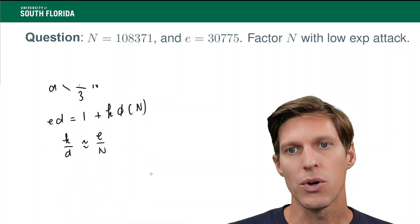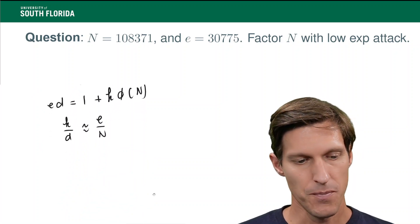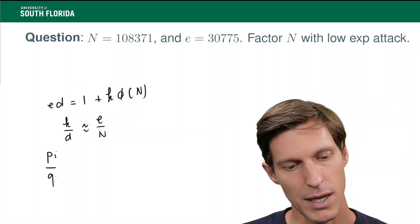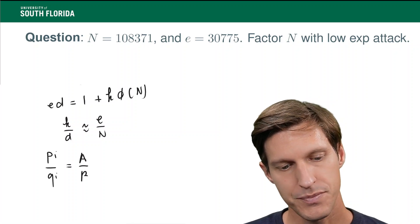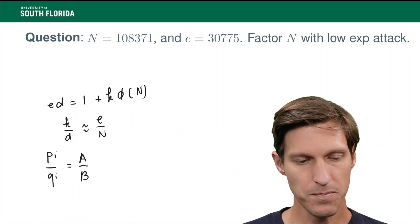Now, the issue, of course, is that we need to identify which of these conversions it is. So, assume that you're given pi over qi, or the i-th conversion, which we'll call a over b. Then, how do we decide that this is, in fact, k over d?